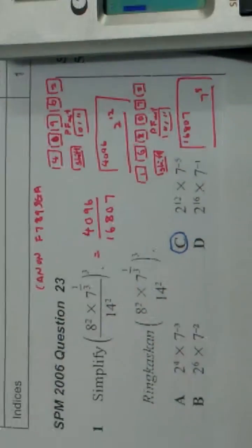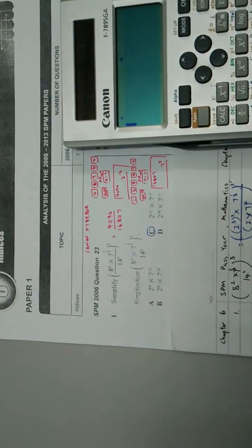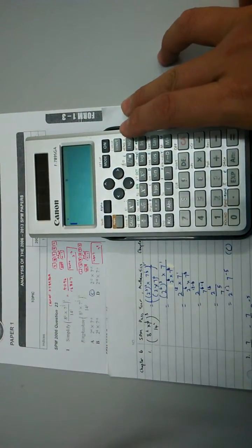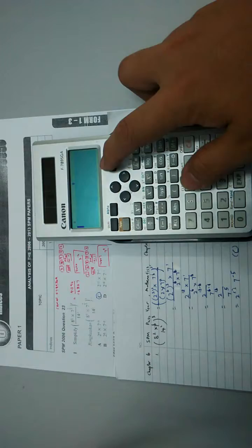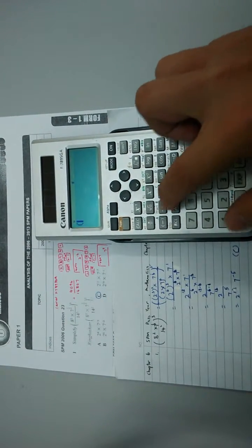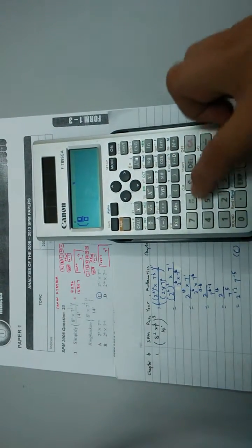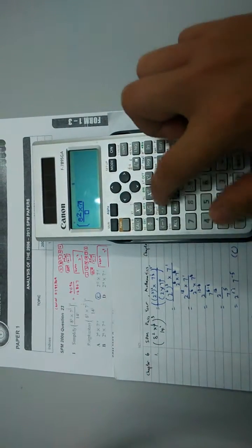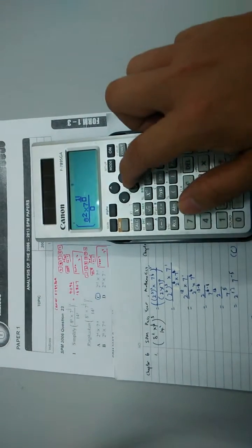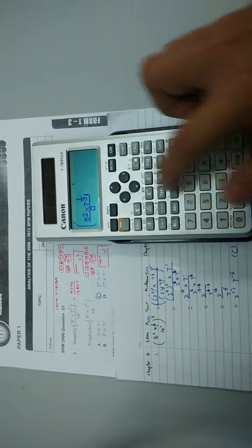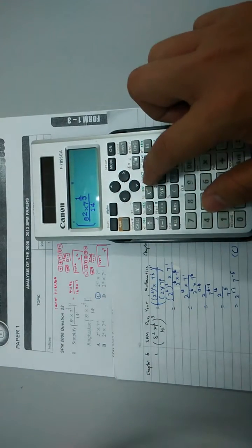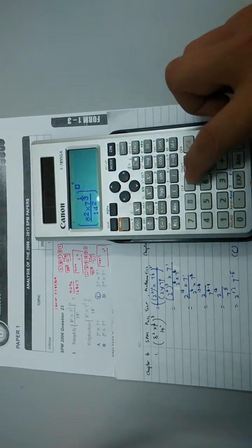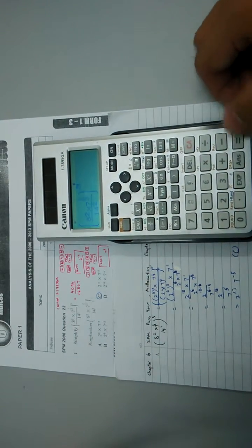So I key this into the calculator. First bracket, 8 square, multiply with 7 to the power of 1 over 3 and then 14 square, the whole thing to the power of 3. And I press equal.